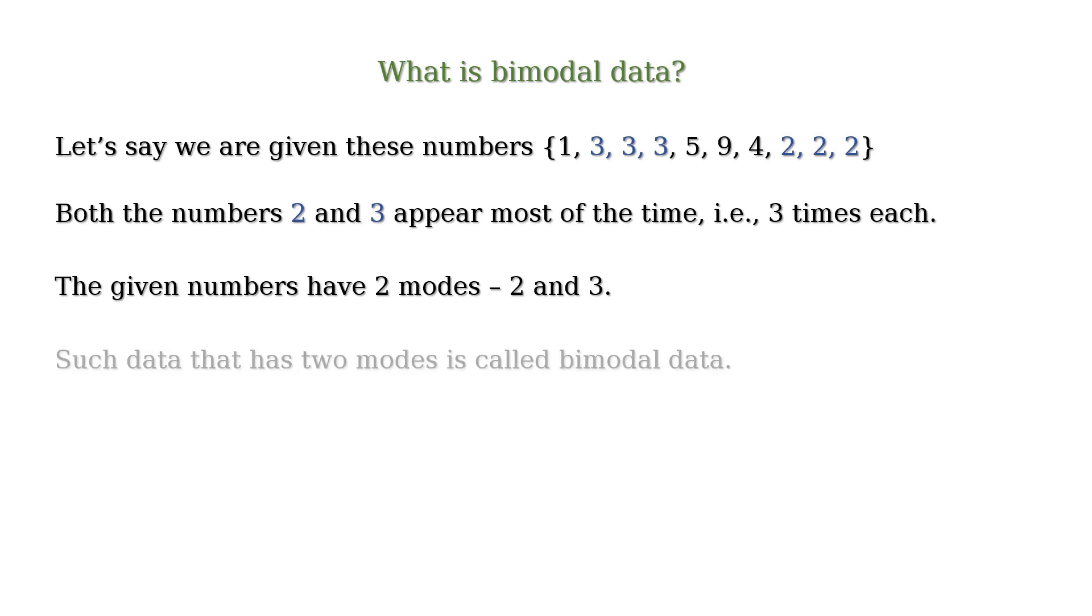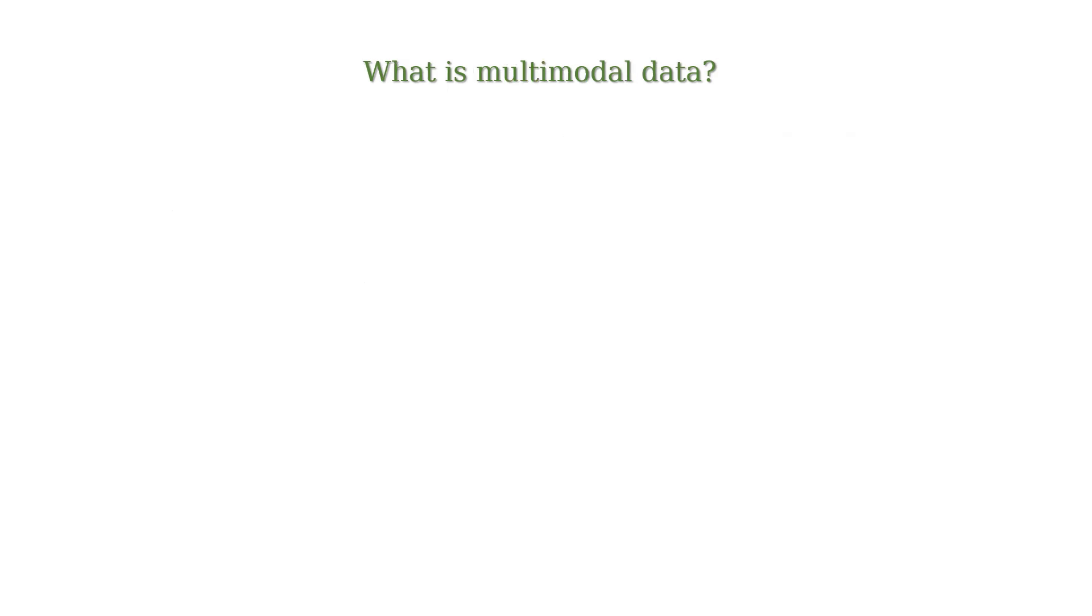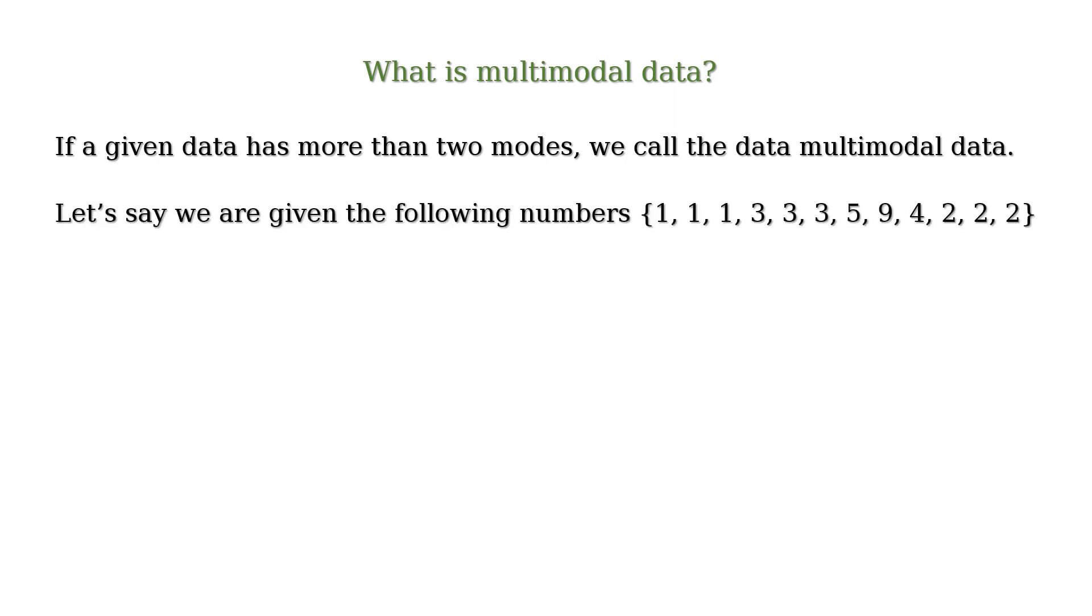Such data that has 2 modes is called bimodal data. And if a given data has more than 2 modes, we call the data multimodal data. For example, let's say we are given the following numbers.